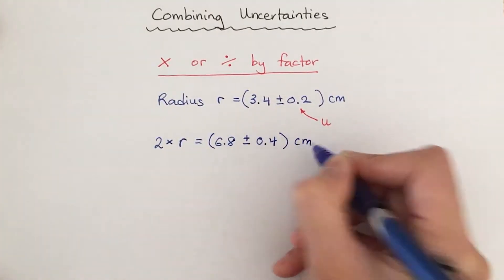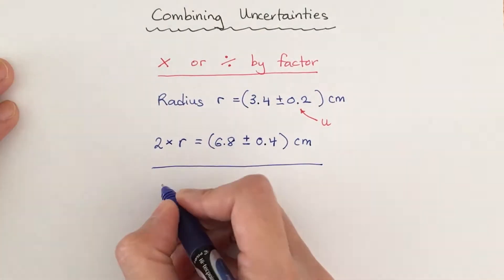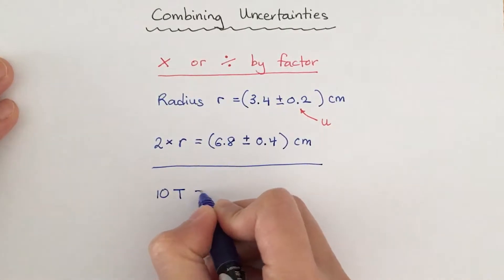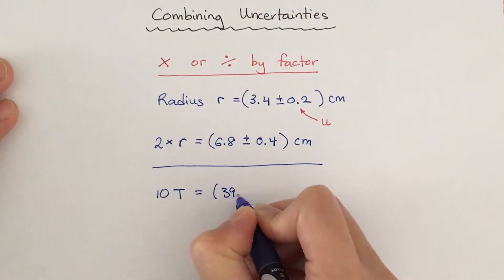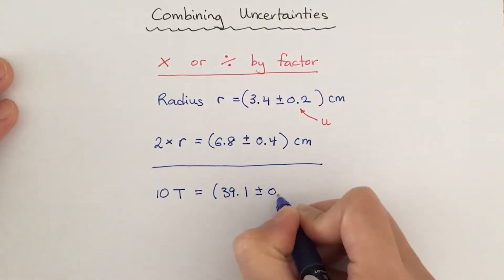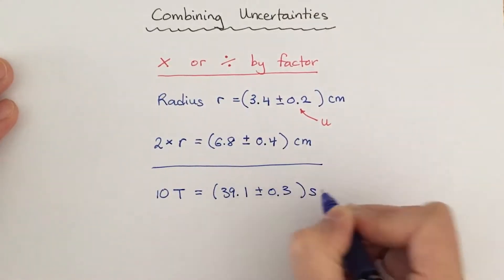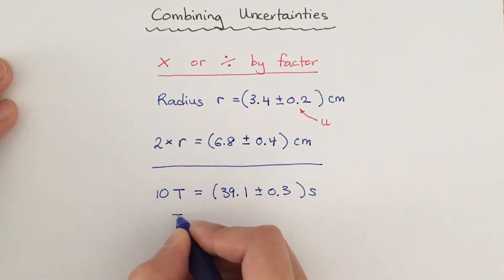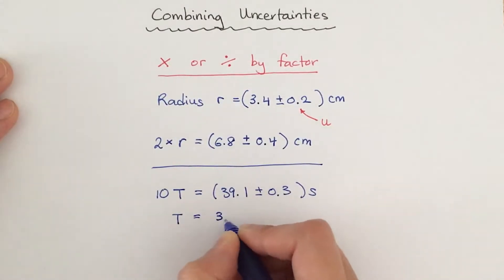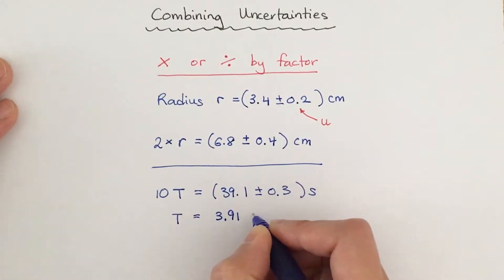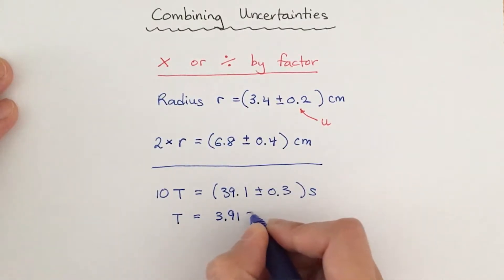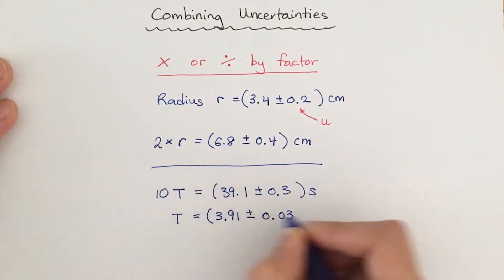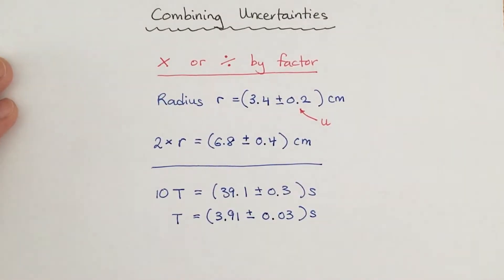Here is another example looking at division. I have measured 10 oscillations of a pendulum, so I've found 10 times the time period. I measure it to be 39.1 seconds with an absolute uncertainty of 0.3 second. If I divide that measurement by 10, I get the time period. I also need to divide the absolute uncertainty by the same factor, which is 10. So the time period is 3.91 seconds with an absolute uncertainty of 0.03 second.